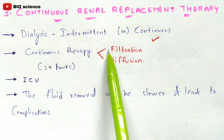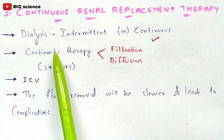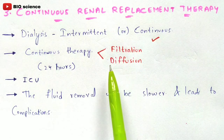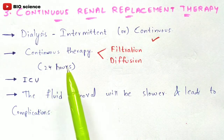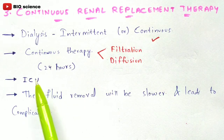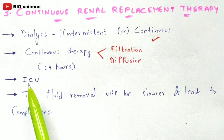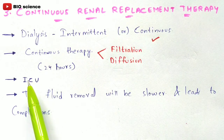To summarize: IHD uses filtration, peritoneal dialysis uses diffusion, and CRRT can use either filtration or diffusion. CRRT takes 24 hours of continuous time, making it high-risk. The patient must be kept in an ICU — Intensive Care Unit — due to the severity of their condition.